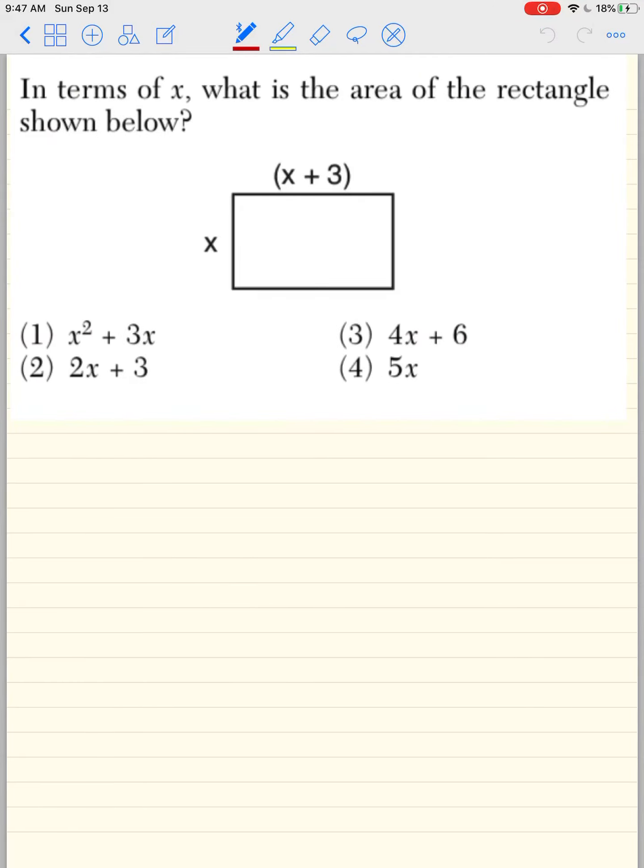let's try another one. What is the area of the rectangle in terms of x? Area means to multiply. Area means all of this. Okay, so area means to multiply. How do we multiply a monomial, which is x, times a binomial x + 3?